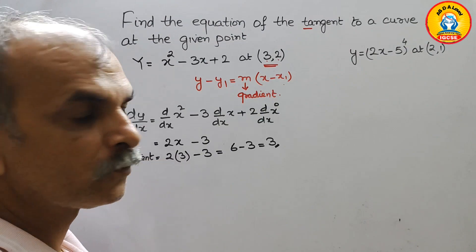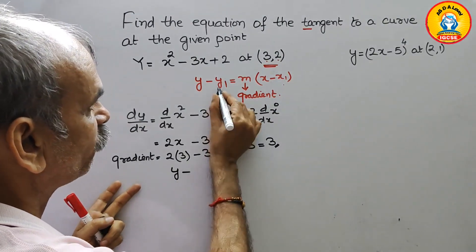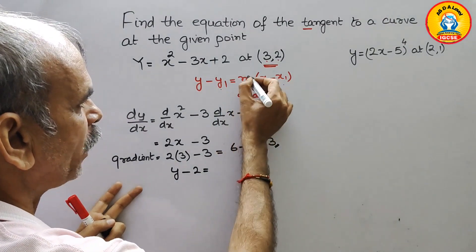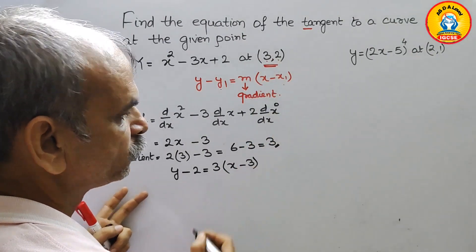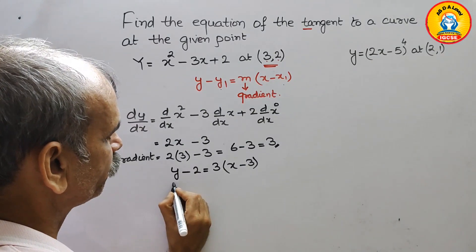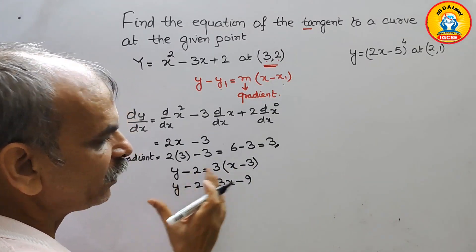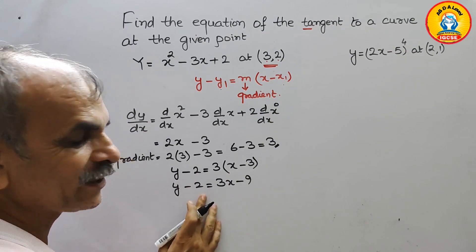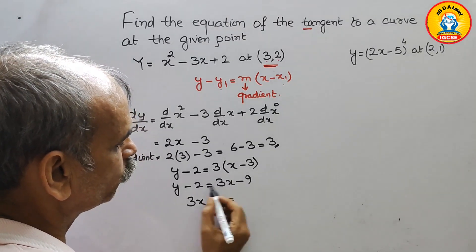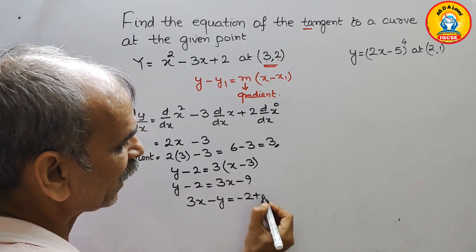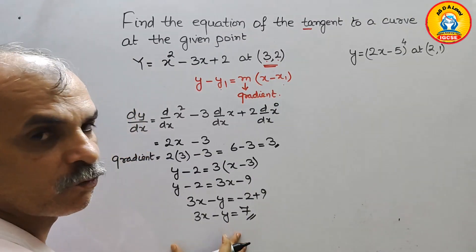So 3 is your gradient. Now we will substitute every value into the formula. We get y minus y1, where y1 is 2, equals m which is 3, times x minus 3. Solving this: y minus 2 equals 3x minus 9. Bringing everything across, we get 3x minus y equals 9 minus 2, which is 7. So 3x minus y equals 7 is the equation of your tangent.